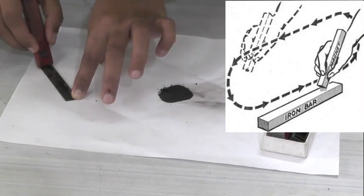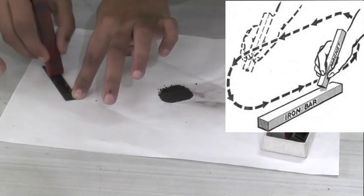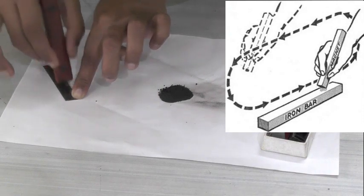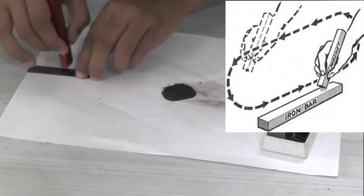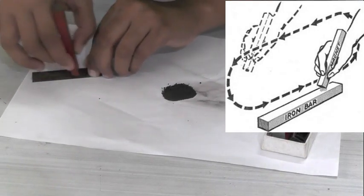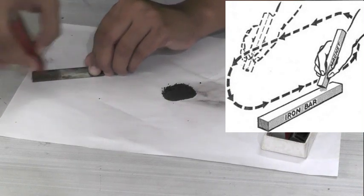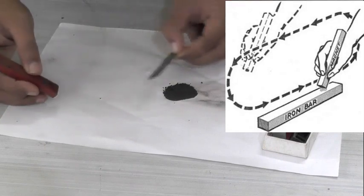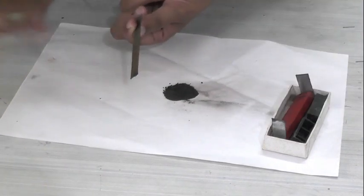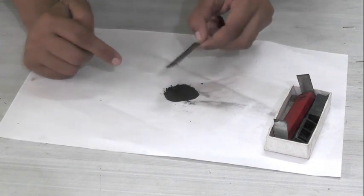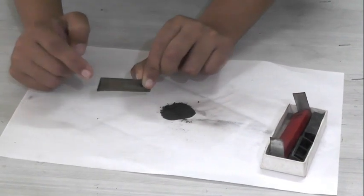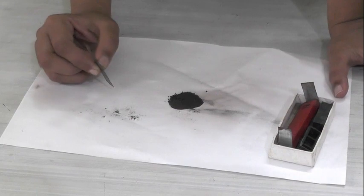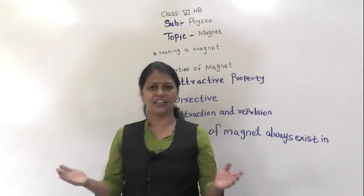When you reach end B, you have to lift it up and again rub from A to B — 20 to 30 times. Now these are the iron filings which will help to test it. Can you see the attraction? This iron strip is behaving as a magnet — the iron filings are attracted towards it. So we have prepared this as a magnet.